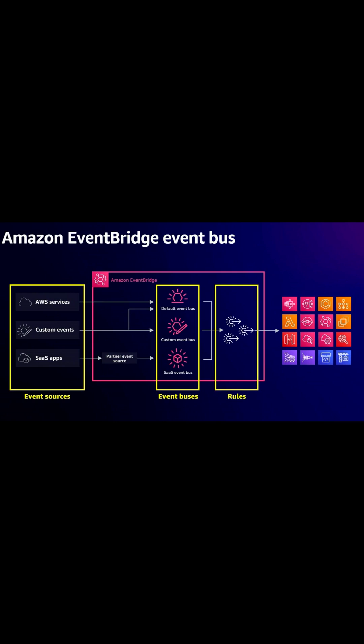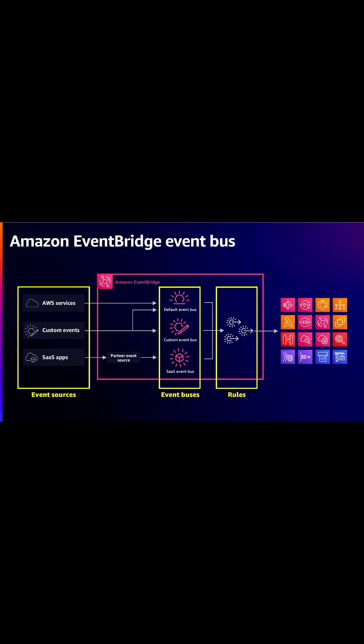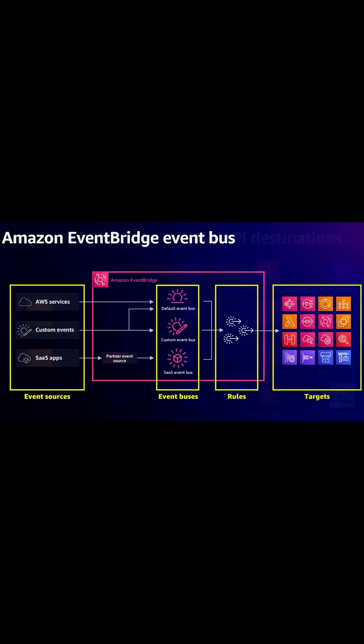Inside those event buses we have rules, and those rules will be the ones directing the events into different places. For example, a rule that says all events coming from S3 — from a particular bucket when a new file is created — will trigger a Lambda function. Or all events from when a new item is created in DynamoDB will go to an SNS topic for a message to be sent.